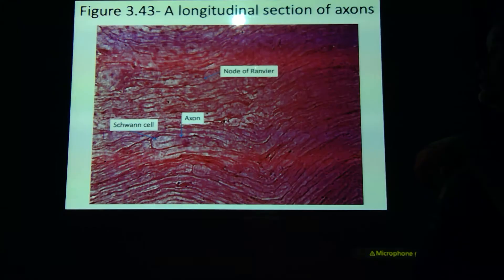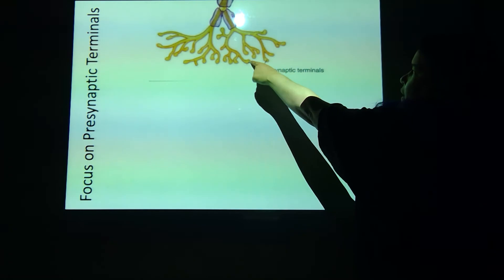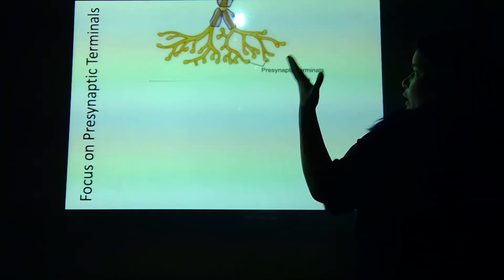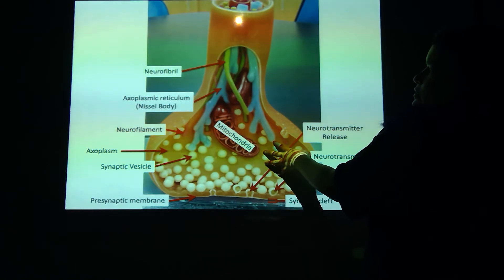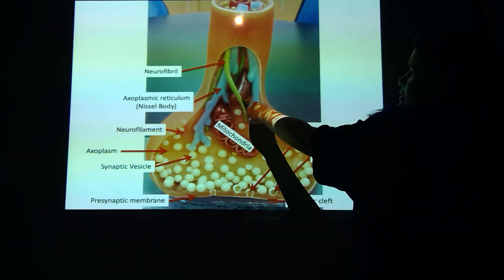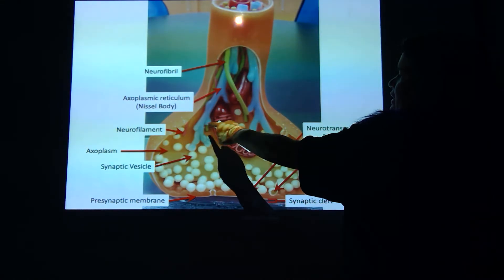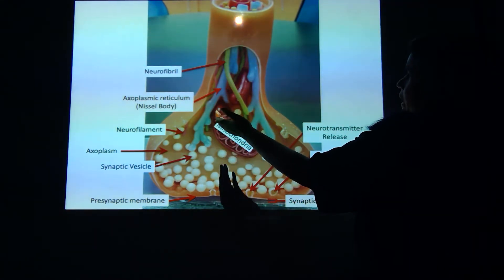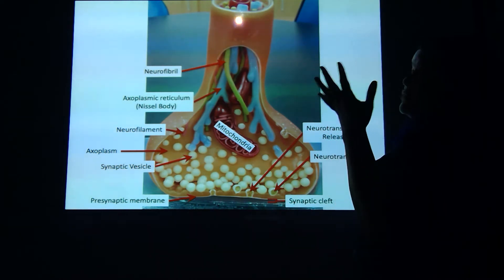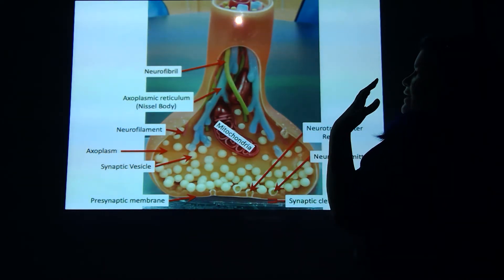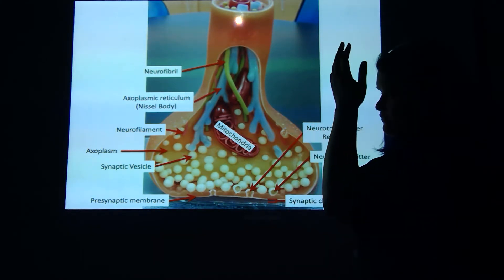Basically, what I'm doing is taking one of these little feet and blowing it up so you can see inside of it. So I've got neurofibrils. I still have the axoplasmic reticulum — also known as the Nissl body in the cell body, the soma. Why do I call it the axoplasmic reticulum? Because it's in the axon and I'm a scientist — I have to make everything complicated.